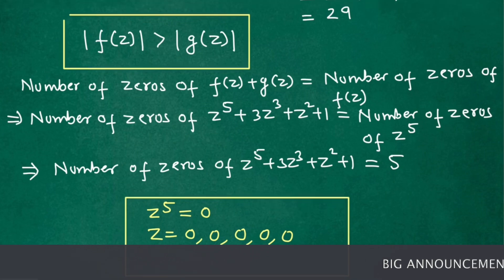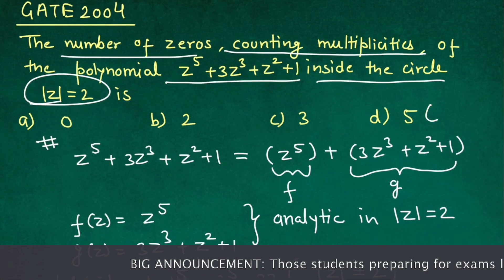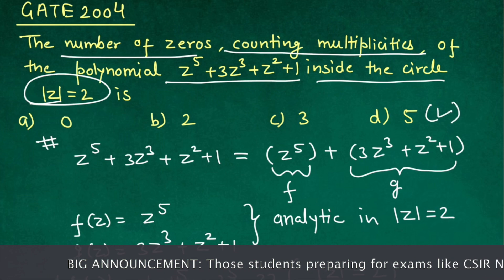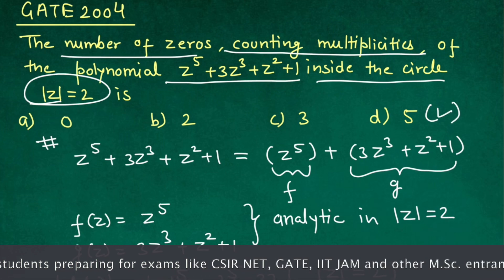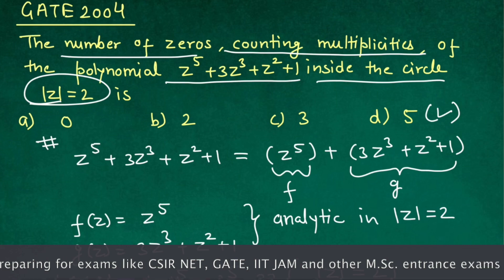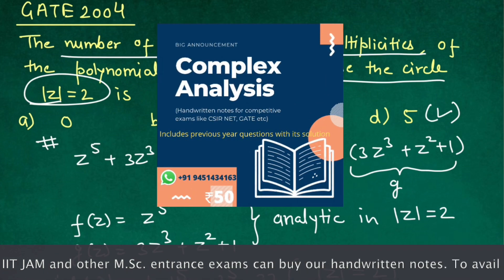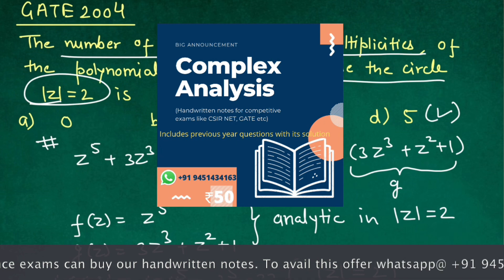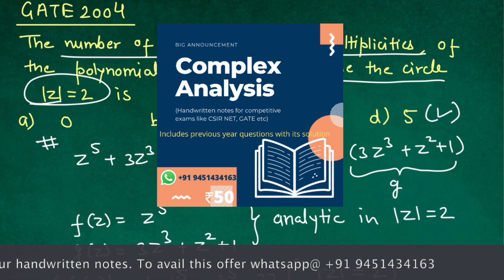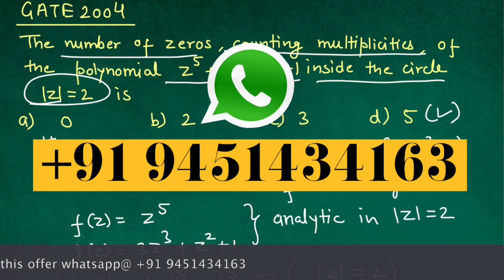Option D is correct here. This video ends here. If you want to learn more such problems, you can buy our complex analysis handwritten notes for a very reasonable price of only 50 rupees. If you are interested, you can contact us through the WhatsApp number shown. Thank you for watching.